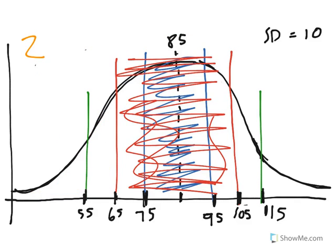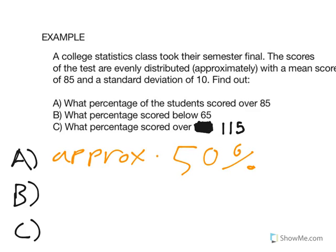We add 2.35 plus 0.15, and that equals 2.5. That is our answer. 2.5% of the class scored below 65.